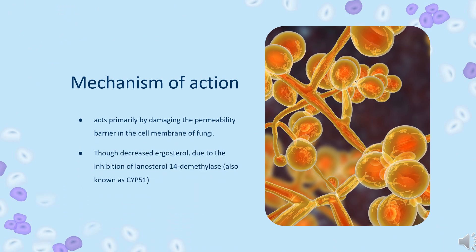Mechanism of action: bifonazole works by inhibiting the production of a substance called ergosterol, which is an essential component of fungal cell membranes. It acts to destabilize the fungal cytochrome P450 51 enzyme, also known as lanosterol 14-alpha demethylase. This is a vital membrane structure of the fungus, and its inhibition leads to cell lysis.